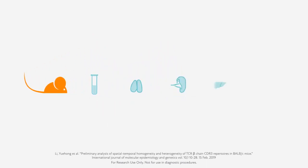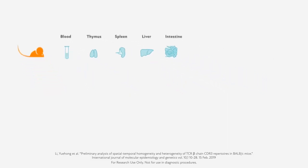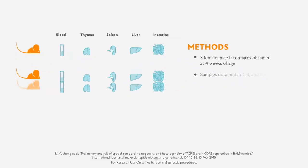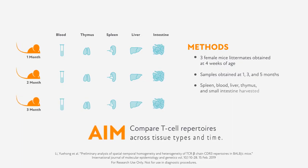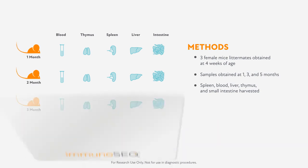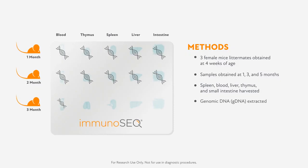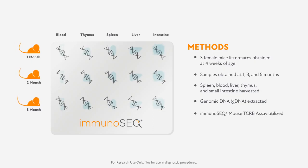In this study by Lee et al., the ImmunoSeq mouse TCR beta assay was used to examine tissue repertoires in mouse littermates at three time points. The aim was to compare thymic and peripheral TCR beta repertoires between mice at different ages after tissue harvesting. Genomic DNA was extracted from the 15 obtained samples, and mouse TCR beta chain CDR3 repertoire data were generated using the ImmunoSeq assay.